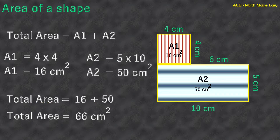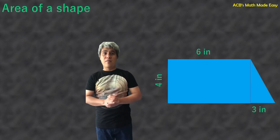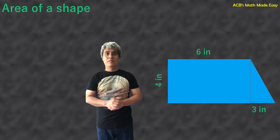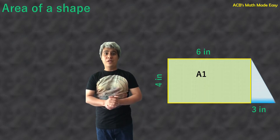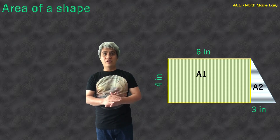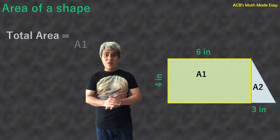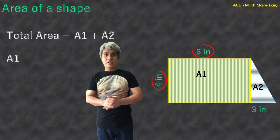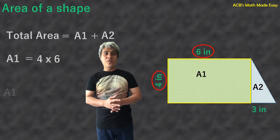We will try another shape. This will be our new shape, and these are the dimensions: 4 inches, 6 inches, and 3 inches. This will be Area 1 — a rectangle shape. And this is Area 2 — a right triangle shape. Therefore, the total area of the shape is the sum of Area 1 and Area 2. Area 1 is the product of a rectangle: 4 inches times 6 inches, 4 times 6. So Area 1 is 24 squared inches.